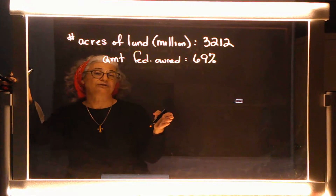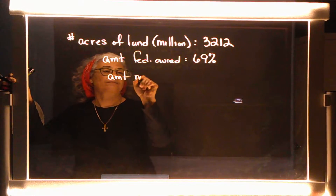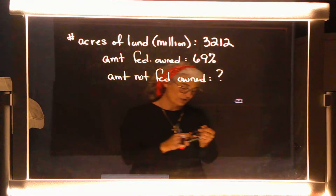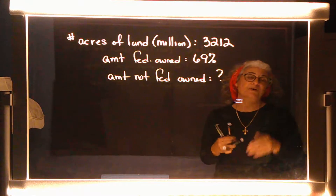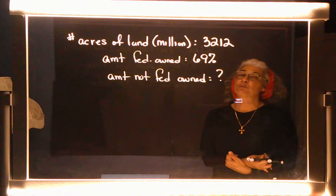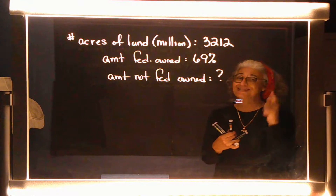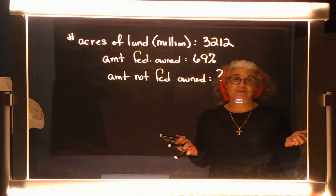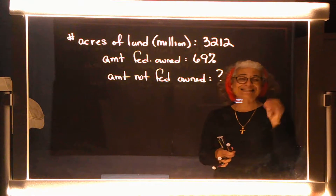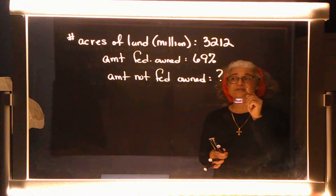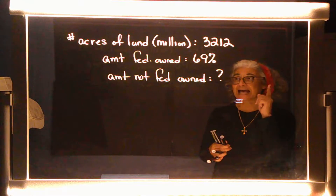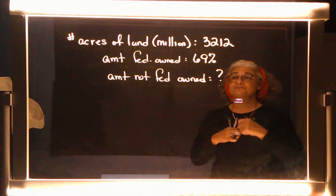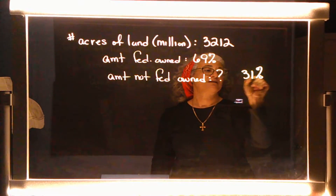There are a couple of ways to work out this story. The fact that they gave us the percentage that is federally owned helps us find the percentage that is NOT federally owned. The most we can have is 100%, so if 69% is federally owned, then the percentage not federally owned is 31%.